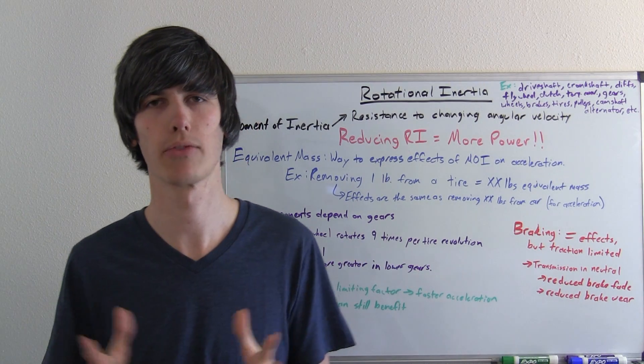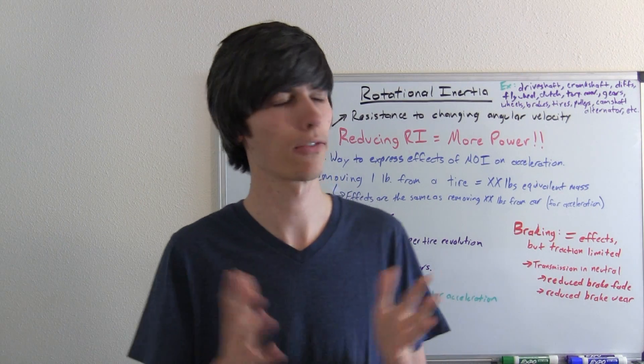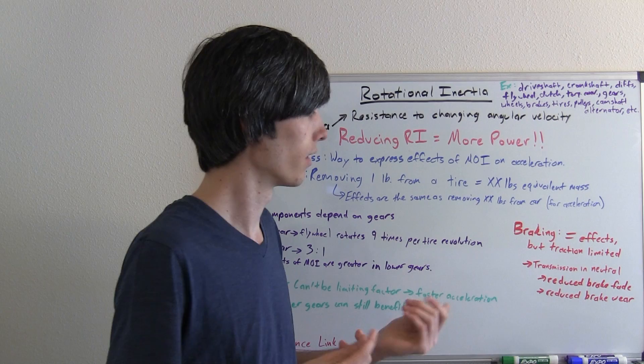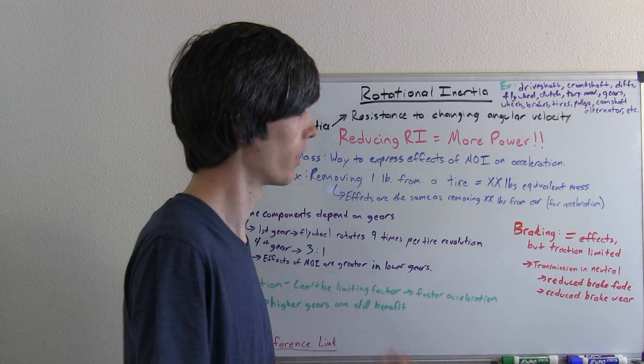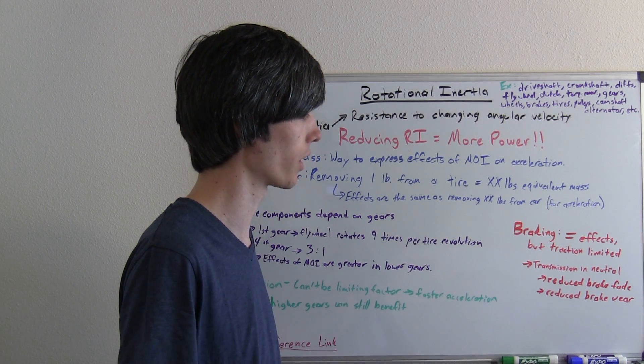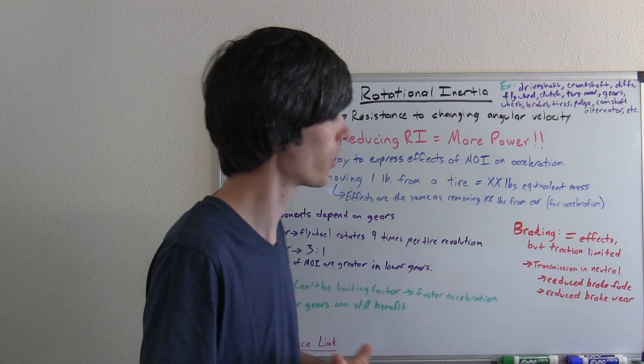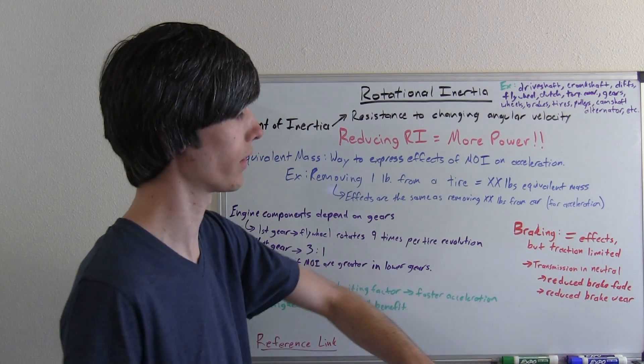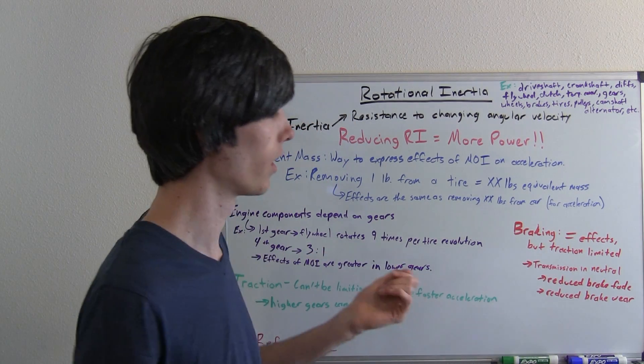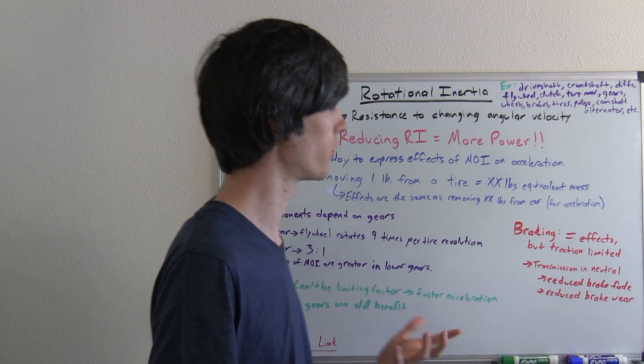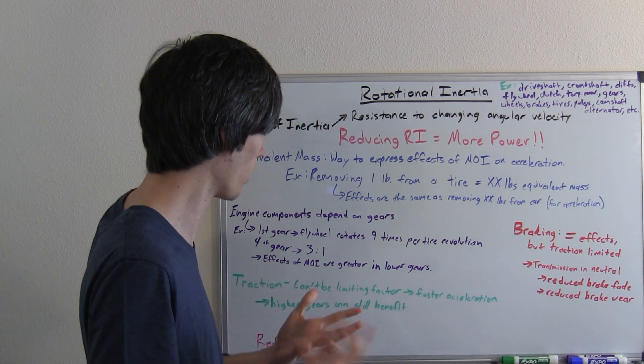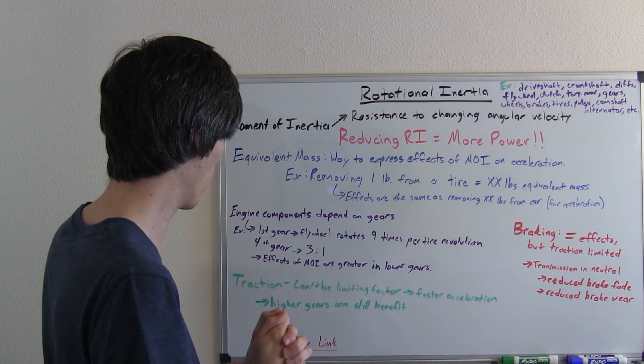So it's that friction that causes whether or not you can stop earlier, not necessarily the rotational inertia. But nonetheless, it could help. And it does give you the benefits of you'll have reduced brake fade and reduced brake wear, because you don't have to stop as much force. You don't have to use as much energy to stop your car.